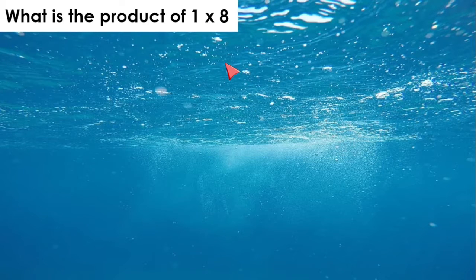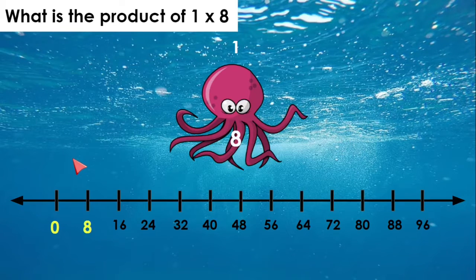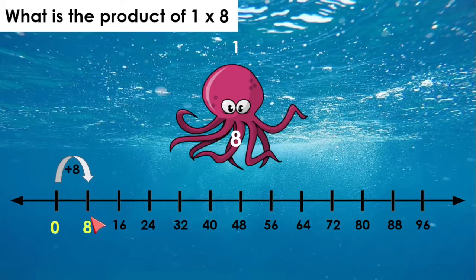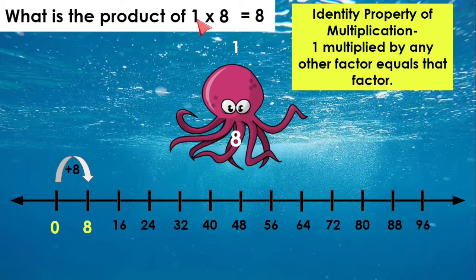1 times 8. We need 1 octopus with 8 legs. How many legs do we have in all? Let's go ahead and look at a number line. We know 0 times 8 is 0. If we add 8 more, we know we have 8. So 1 times 8 equals 8. We also know the identity property of multiplication that states 1 multiplied by any other factor equals that factor.